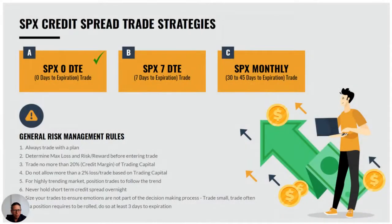The trade plan consists of actually three strategies: zero DTE — and DTE stands for days till expiration — seven DTE, and monthly.